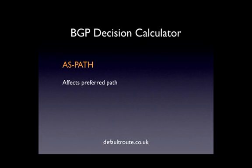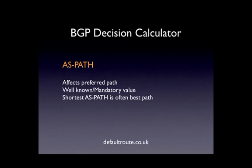AS path affects preferred path. Most people use AS path prepending to influence the way traffic comes to you — you advertise your IP networks with an increased AS path length on one of your links to make it less viable. The longer the path, the worse BGP sees it, so it will take the shortest path. AS path is a well-known mandatory value, and shortest path is best. It's also used as a loop prevention mechanism.